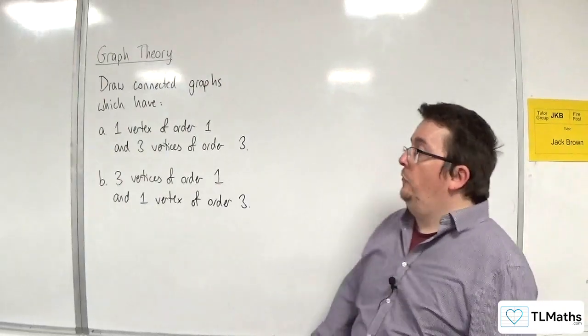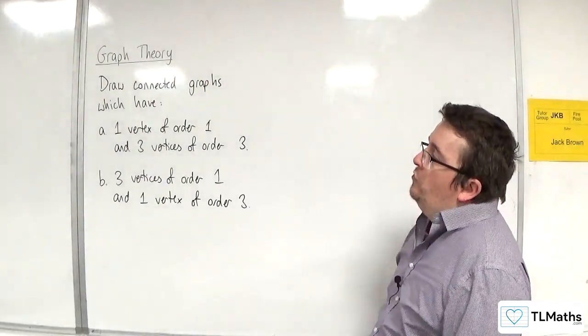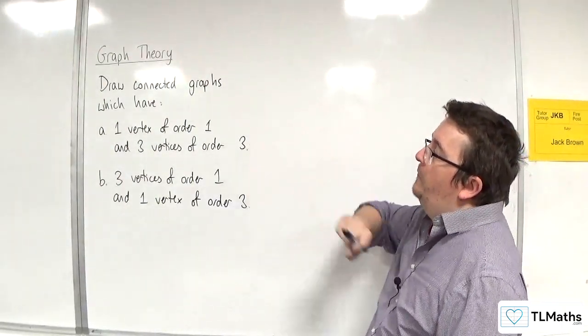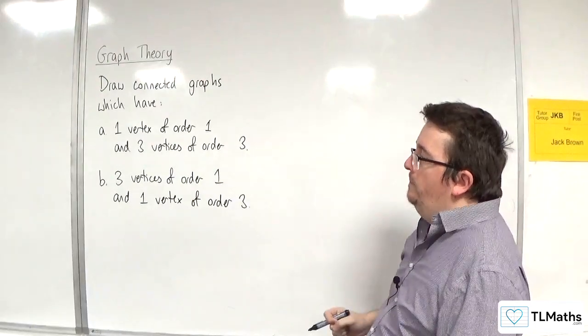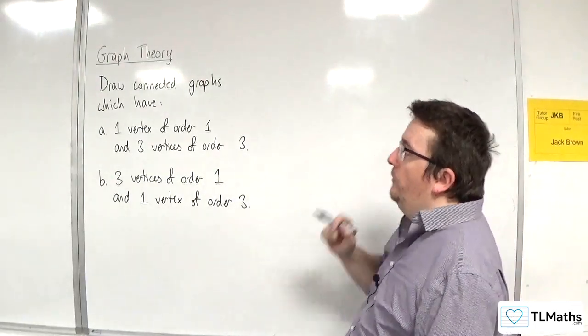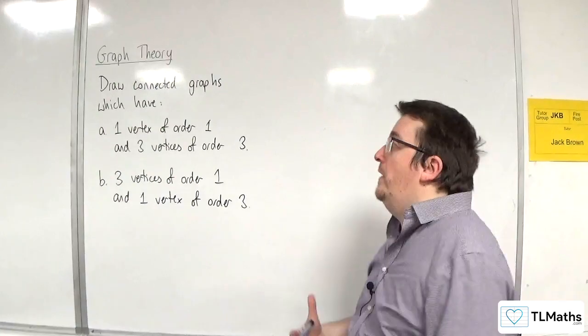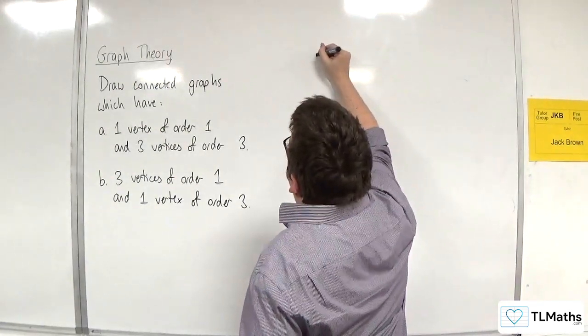In this video, we've got a little puzzle. We're going to draw connected graphs. So for the first one, which have one vertex of order 1 and three vertices of order 3. So in total, there are four vertices to consider.